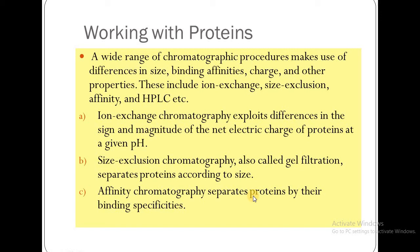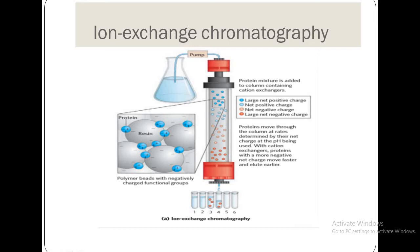Affinity chromatography separates proteins according to their binding specificities. In terms of procedure, the protein mixture — shown here in a beaker — is flowed into a column that contains cation exchangers.